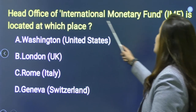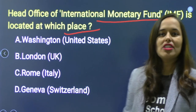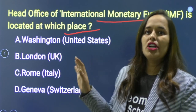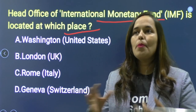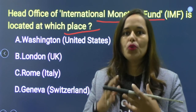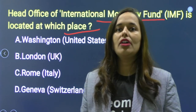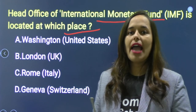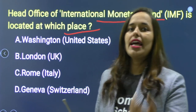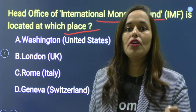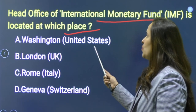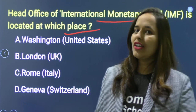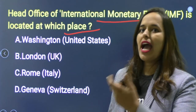Question 1: Head Office of International Monetary Fund — at which place is it located? Options are: Washington DC (US), London (UK), Rome (Italy), Geneva (Switzerland). The correct answer is option A — Washington DC is the capital of the US, so option A is correct.